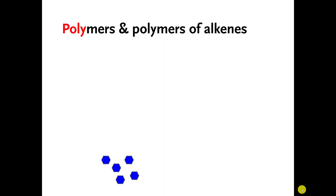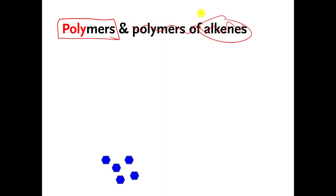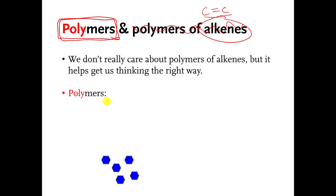In this video I am going to talk about something called a polymer. I'm not really going to focus too much on polymers of alkenes — if you remember from previous videos, alkenes are molecules that have a carbon-carbon double bond. I am going to focus on what a polymer is, because that's going to become important in the last collection of videos coming up. So, polymers.